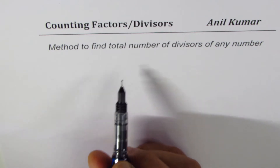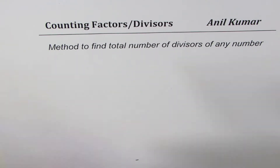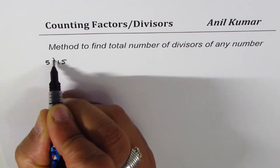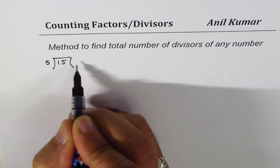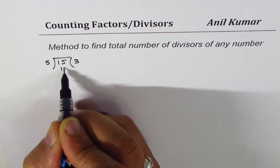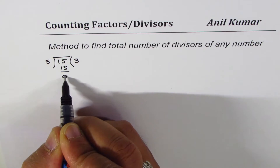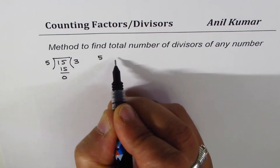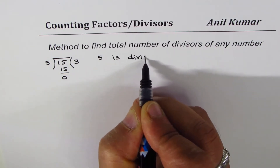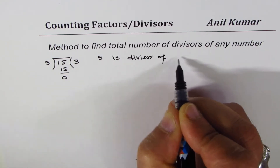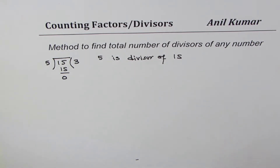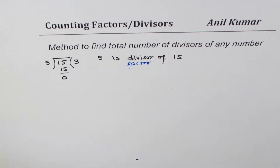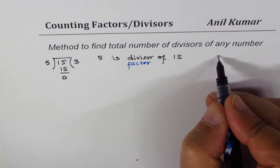Let's understand what a divisor is. If we divide 15 by 5, we get 5 times 3 is 15 and the remainder is 0. When the remainder is 0, we say 5 is a divisor of 15. Sometimes we also use the word factor — 5 is a factor of 15.